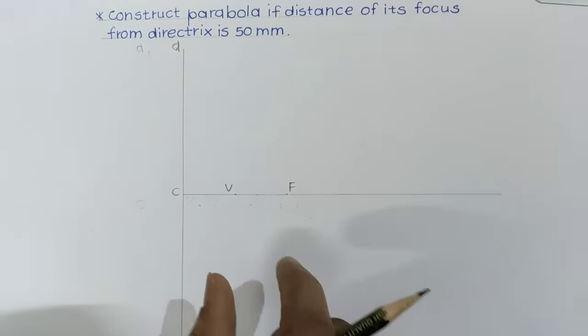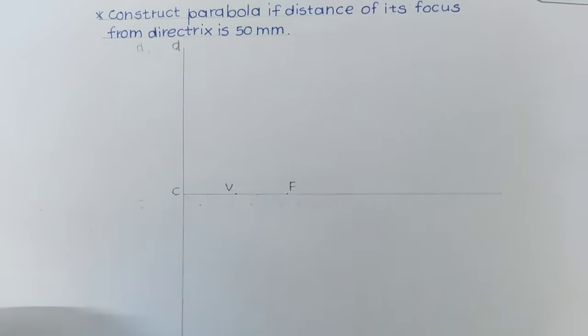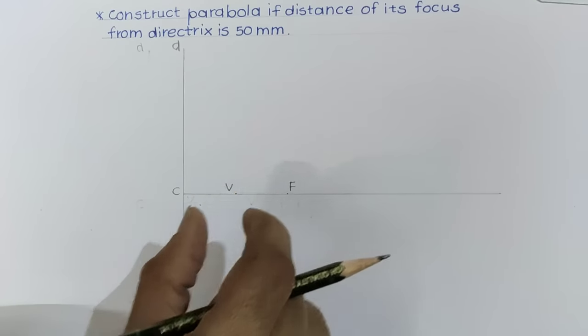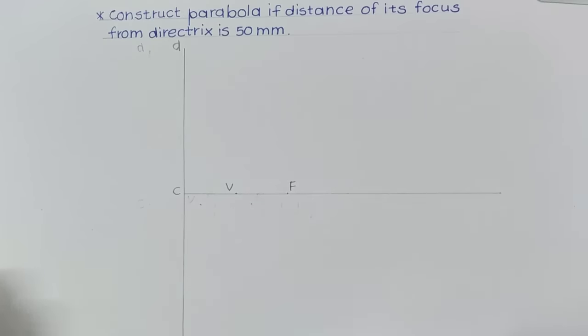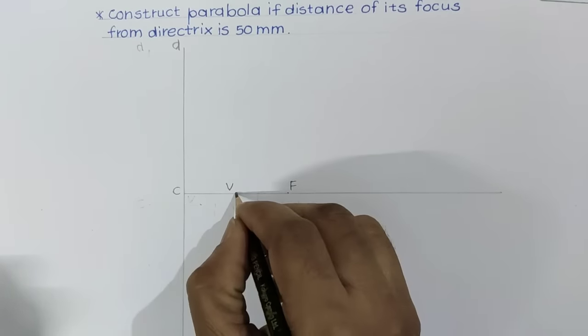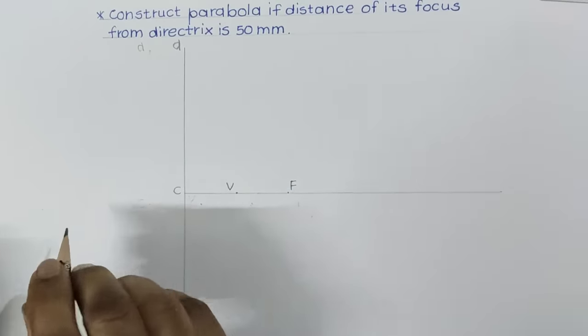If you take the ratio of VF by VC, it will be 1 because this is the midpoint. VF distance is 25 and VC is also 25. This total distance is 50. As VF by VC is equal to 1, the vertex lies on parabola. It is the common point for parabola and axis.